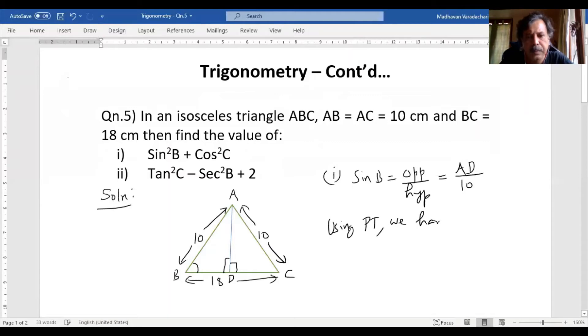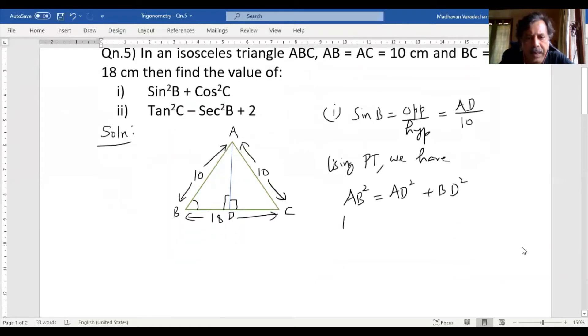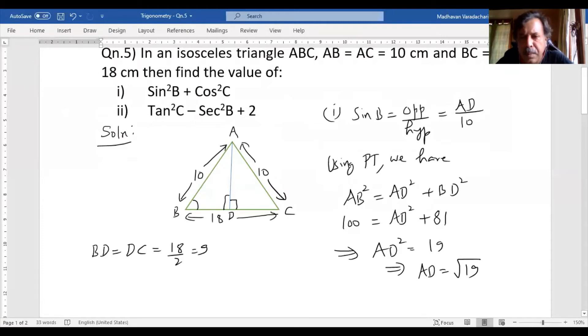We have hypotenuse square, that is AB square should be equal to AD square plus BD square. So what is AB square? It is 10 square, so it will become 100. AD square, that is what we are supposed to find. BD square, since it is perpendicular, I can say BD is equal to DC and that should be equal to 18 by 2. So it becomes 9. So I will say BD square is 9 square, 9 square is 81, which means AD square is 19 or AD will be root of, so we will come back here and will write square root of 19 divided by 10.